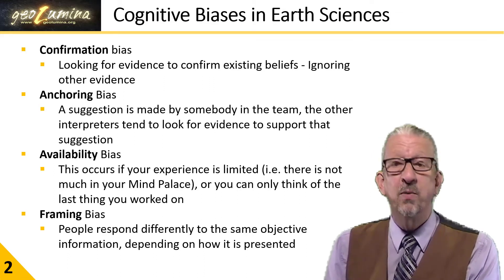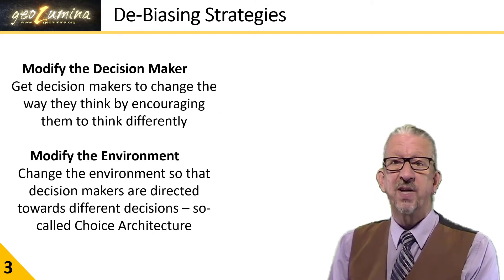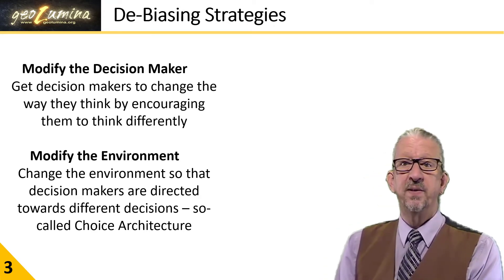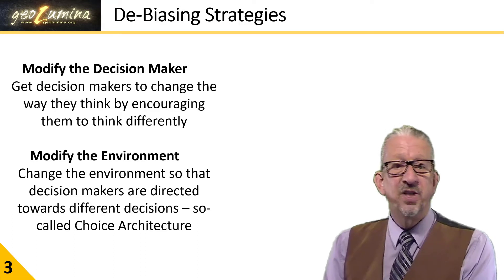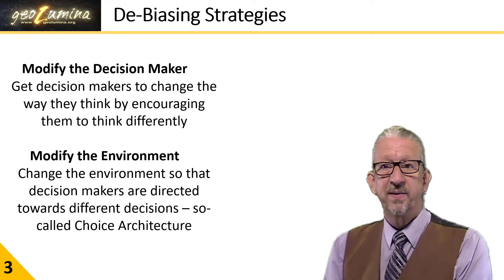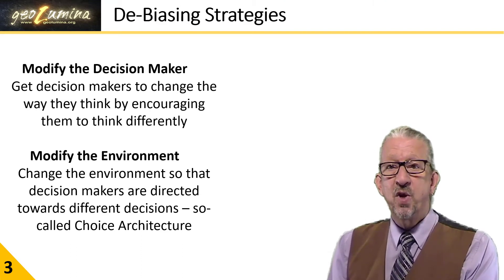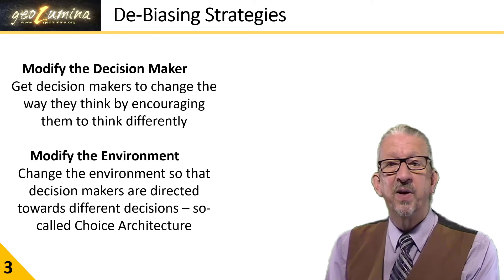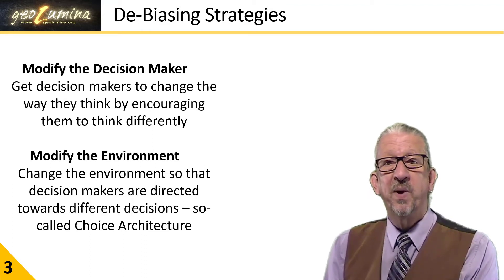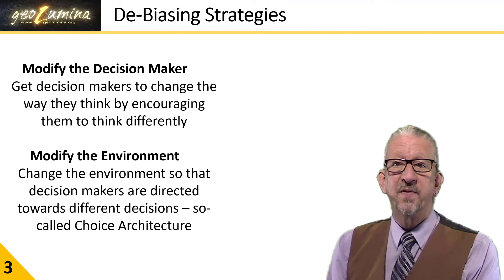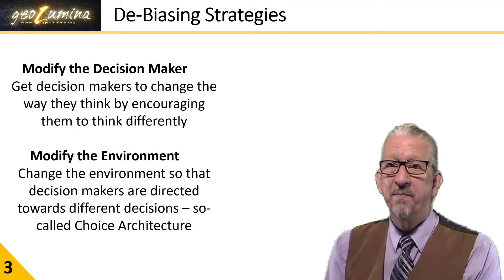That's what we'll be focusing on in chapter three: debiasing strategies. Having understood the nature of cognitive biases in general — and the cognitive biases which specifically plague us in earth sciences — in chapter three we'll be looking at how we can avoid those biases. There are two broad strategies. One is to modify the decision maker: you and I as individuals make a conscious decision to think differently. We learn about cognitive biases and change our behaviours to avoid those biases. But this is actually quite difficult to do because it requires us to make a commitment and, as individuals, make an effort — and that doesn't happen as often as we like.